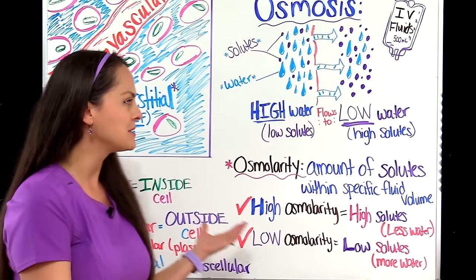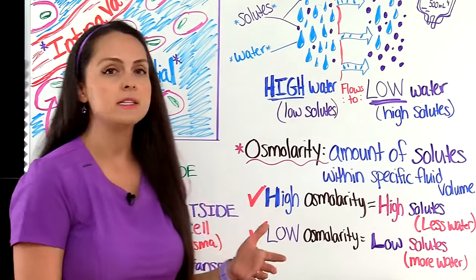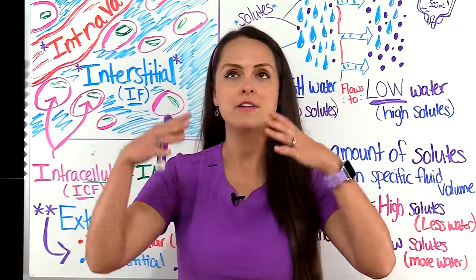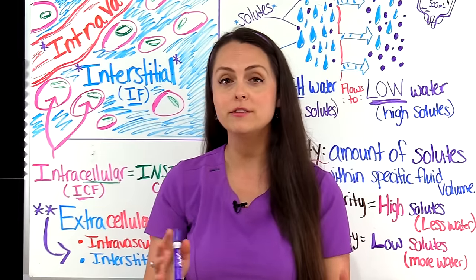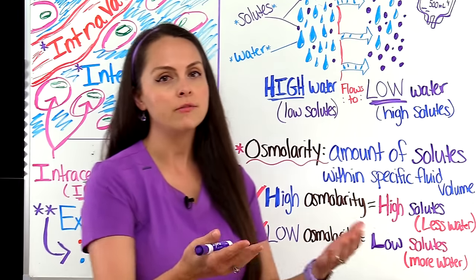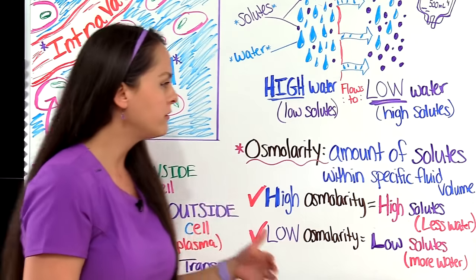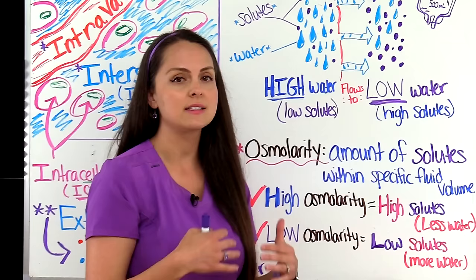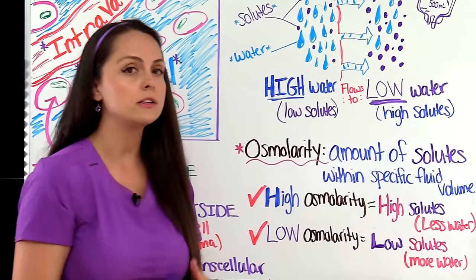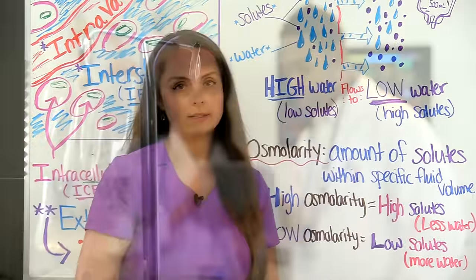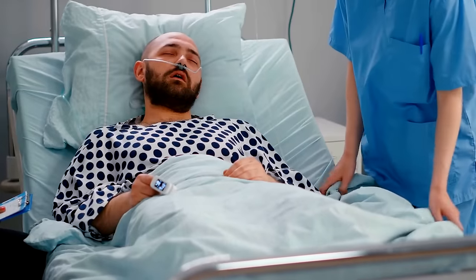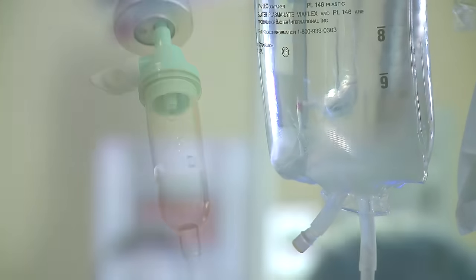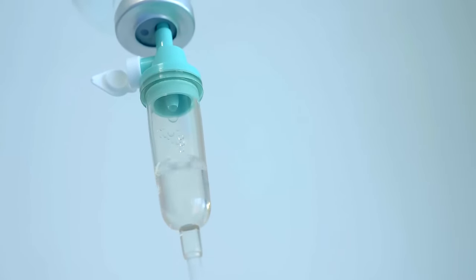Osmolarity is the amount of solutes within a specific fluid volume — in other words, the total solute concentration per liter of solution. Depending on that IV fluid's osmolarity will determine how well osmosis is going to work within the body to shift fluid around these compartments. When a fluid has a high osmolarity, it has a lot of solutes and therefore less water. When a fluid has a low osmolarity, it has fewer solutes and more water. In healthcare, we can use osmolarity to our benefit to treat patients by administering fluids with different osmolarities to move water in or out of these compartments.